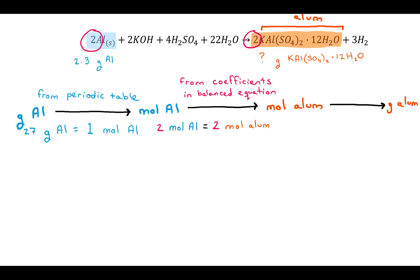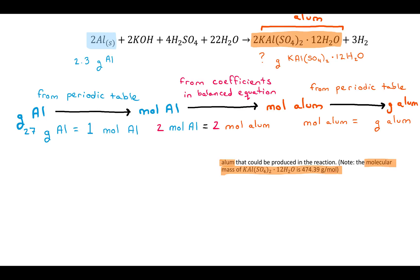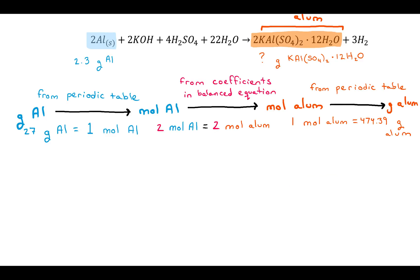So 2 moles of aluminum equals 2 moles of alum from the balanced equation. Finally, to relate moles of alum to grams of alum: normally you'd use the periodic table, but because it's a large compound that would take a long time. The problem gives you the molecular mass — 474.39 grams per mole — meaning you have 474.39 grams of alum for every 1 mole of alum. Use that to fill in the last conversion factor.